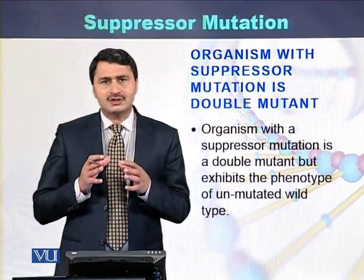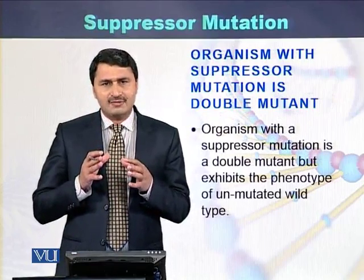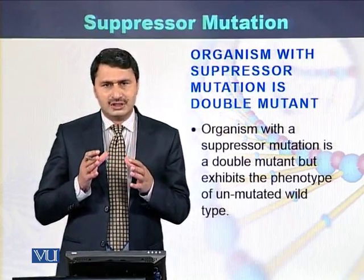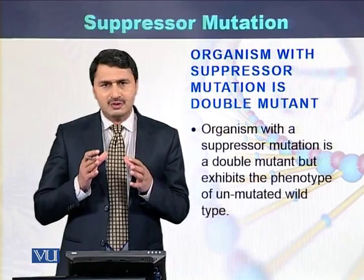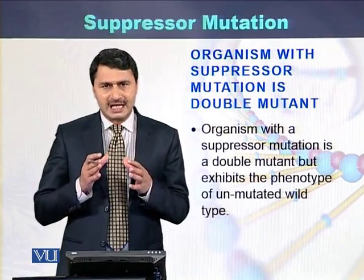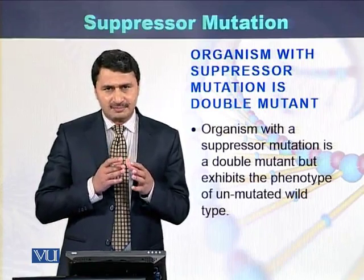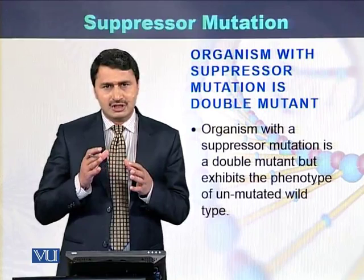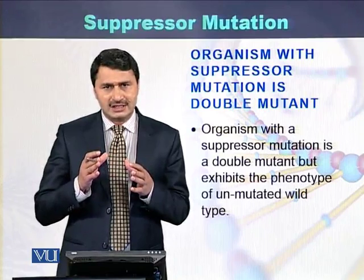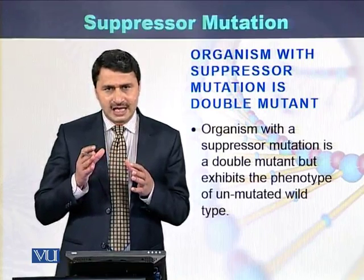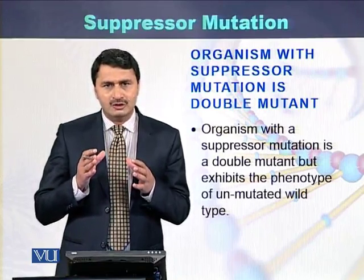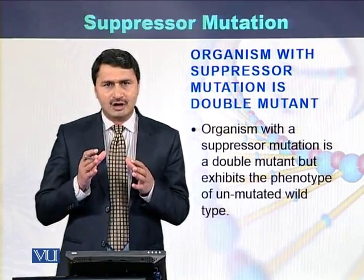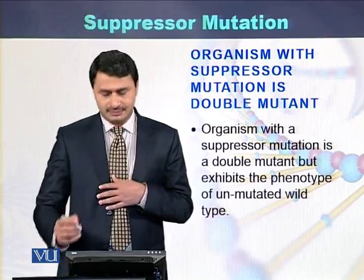Organisms which have suppressor mutations have two mutations. One mutation is present at one point while the second mutation is present on a second point. Those organisms are called double mutants.